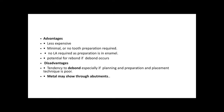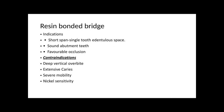Advantages of resin bonded bridges: less expensive, minimal or no tooth preparation required, no local anesthesia needed (working in enamel), and potential for re-bonding. Disadvantages: tendency to debond (use cantilever design to minimize this), and metal showing through abutments can be an aesthetic problem, especially in the anterior region. Indications: short span single-tooth replacement, sound abutment teeth, and favorable occlusion. Deep overbite can be a contraindication due to debonding forces and insufficient lingual space.